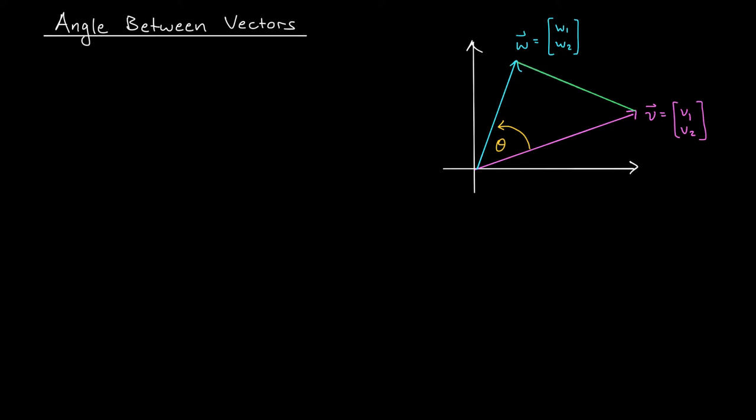I'm going to draw in one more line to complete this into a triangle. I'm going to label a few sides. This side I will call A, this side I'll call B, and this side, C.